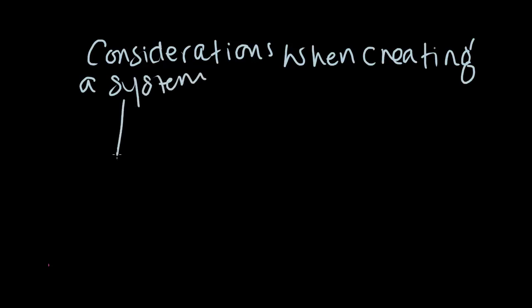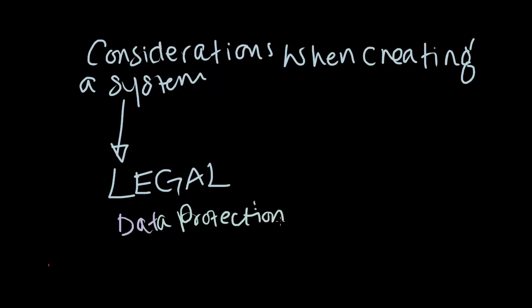The first consideration that designers have to take into account is the legal considerations and this relates to the number of laws that designers have to follow in creating a system. The first law that designers have to adhere to is the Data Protection Act. This says that anyone who stores personal details has to keep them secure and they're responsible for their security. So companies with computer systems that store any personal data have to have processes and security mechanisms designed into the system that meet this requirement.